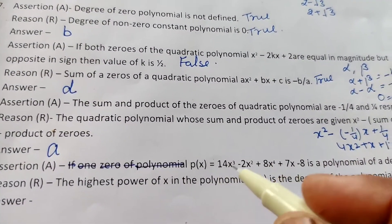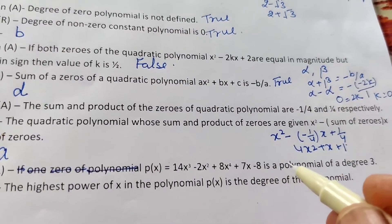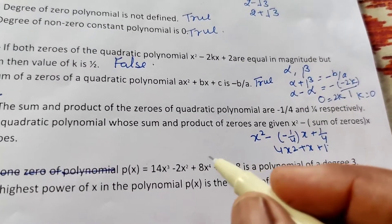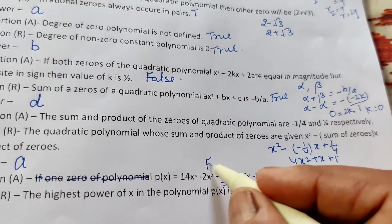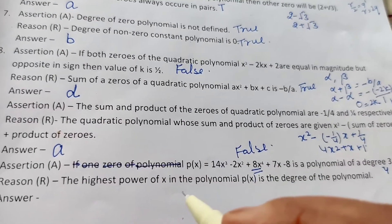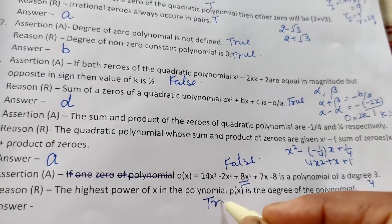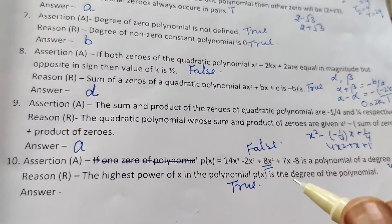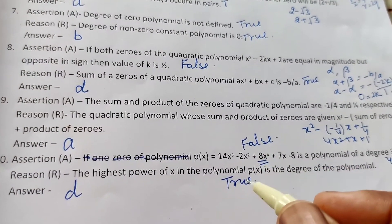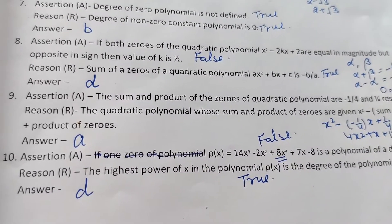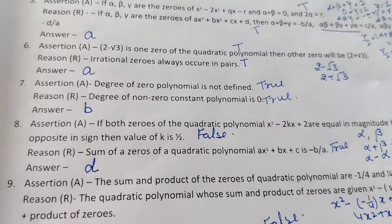Question 10: P(x) = 14x³ - 2x² + 8x⁴ + 7x - 8 is a polynomial of degree 3. This is wrong — the highest power is 4, so the degree is 4. Assertion is false. Reason: the highest power of x in polynomial P(x) is its degree — this is correct. Assertion is false but reason is valid, so the answer is option D. Thank you. This is a worksheet on assertion and reason type questions.